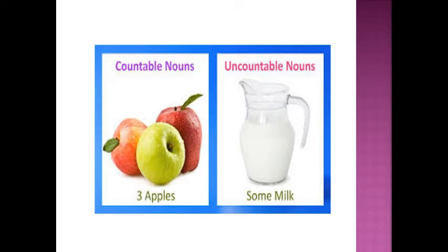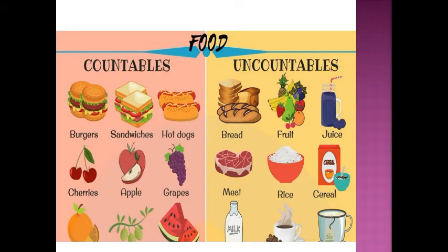In this slide, you can see both countable nouns and uncountable nouns. Countable nouns and uncountable nouns — three apples, some apples. Another slide shows three apples and some milk. Let's read another slide with countable and uncountable nouns. Countable: burgers, sandwiches, hot dogs, cherries, apple, grapes, oranges, olives, watermelon. Uncountable: bread, fruit, juice, meat, rice, cereals, milk, coffee, tea.